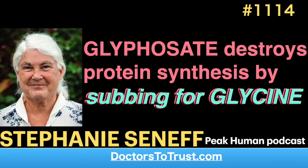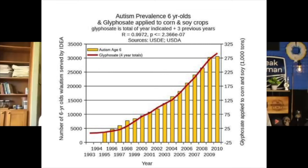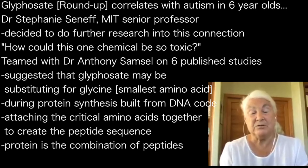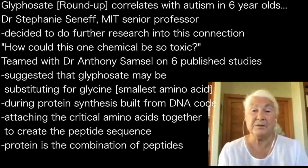Autism rates are going up exactly in step with the rise in glyphosate. There's a stunning curve that shows children in first grade diagnosed with autism in the United States, plotting that over time against the amount of glyphosate being used on the core GMO crops over time and over the preceding four years — from the age of two to the age of six in that child's life, integrated, all of that total. It's a perfect, exact match between those two curves — a stunning correlation coefficient, 0.99 or something like that.